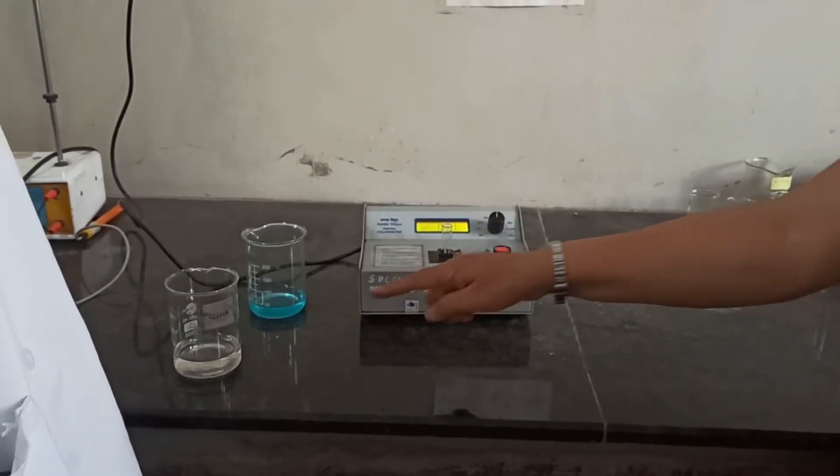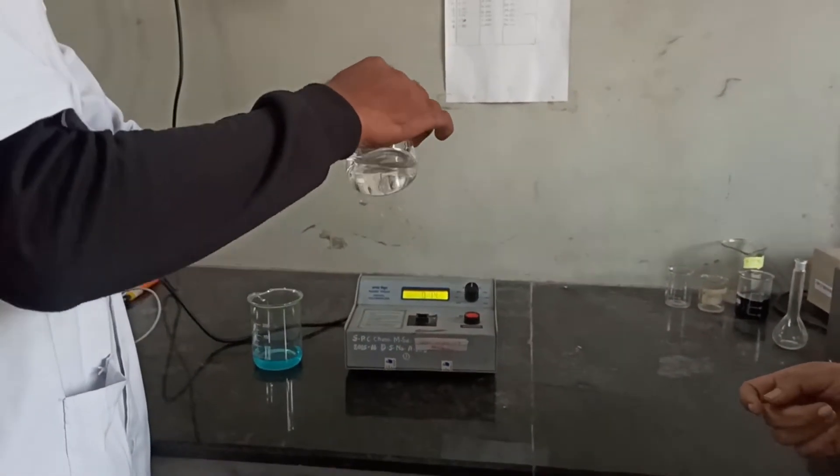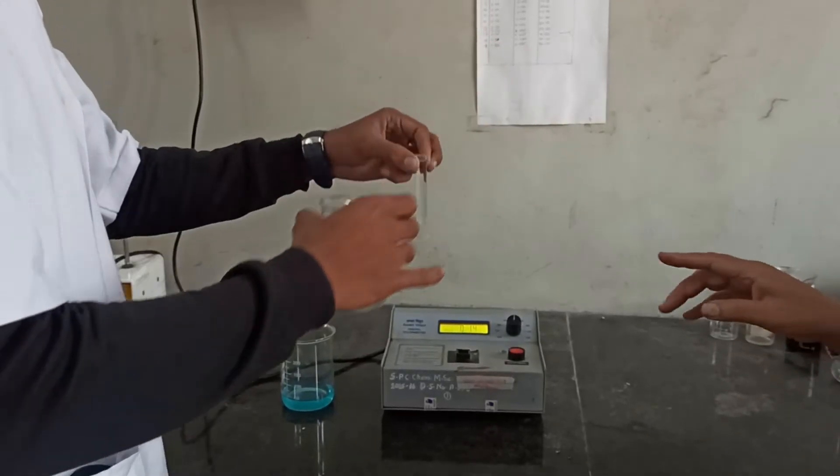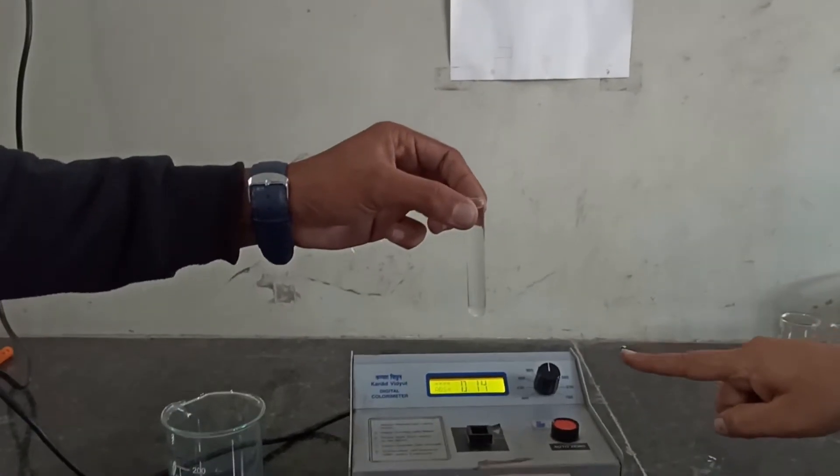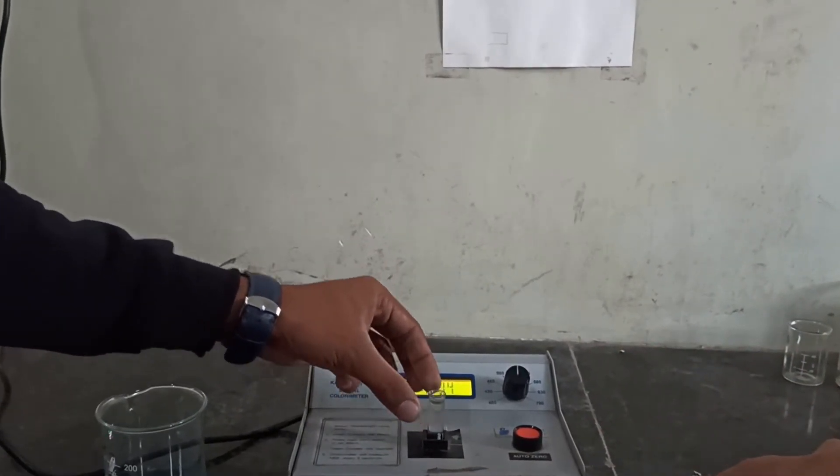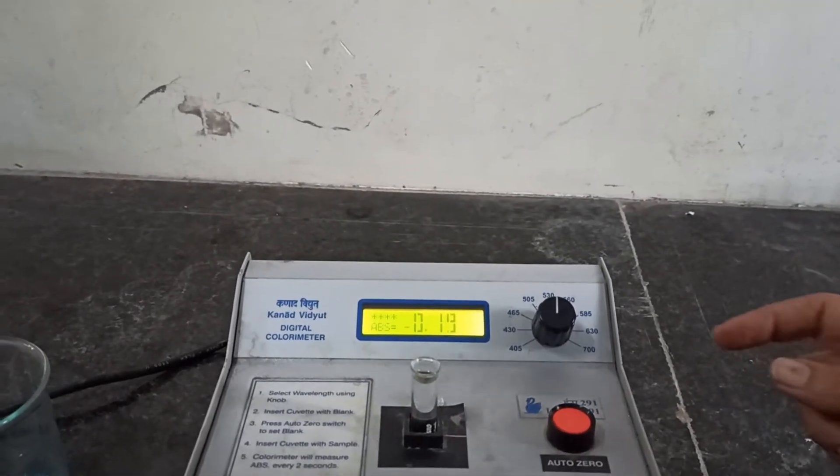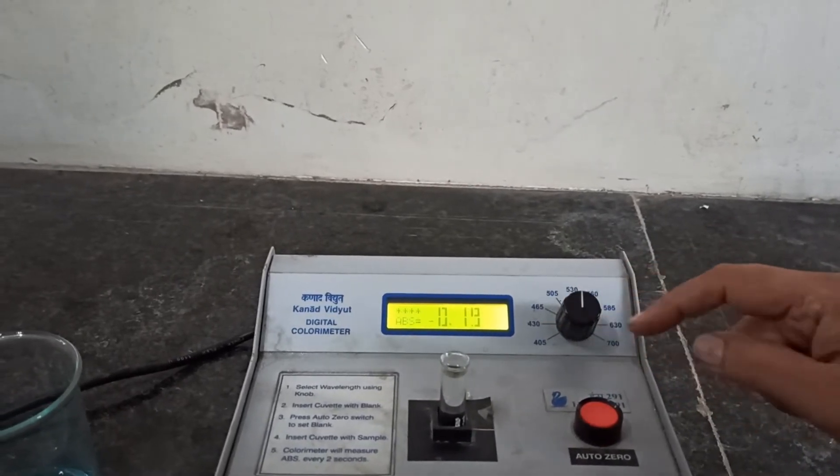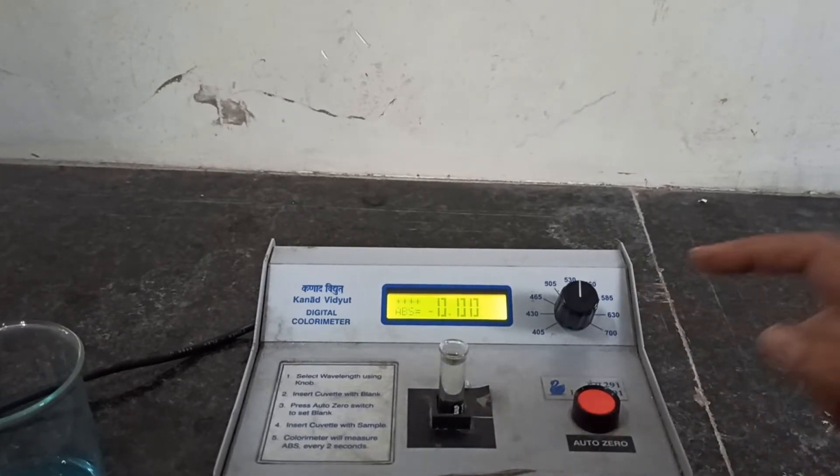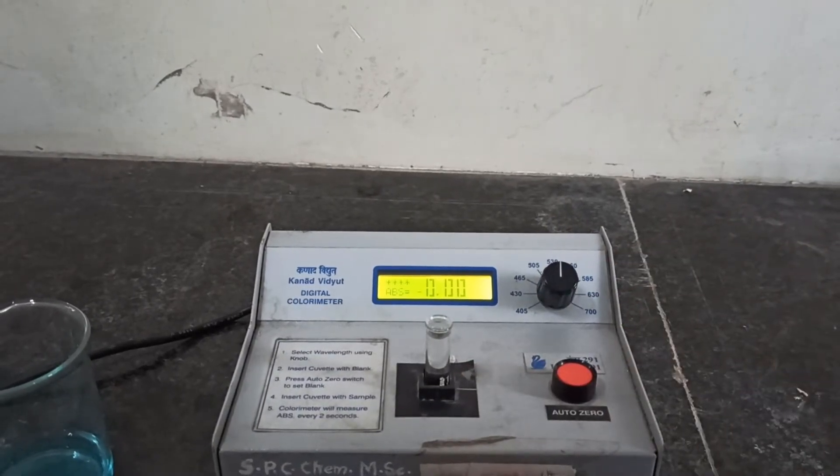We will take first water. As it is a colorless solution, we expect its absorbance to be zero. Look at the digital display. It is showing something, minus 0.19, the reading. We will utilize this push button to make it zero.